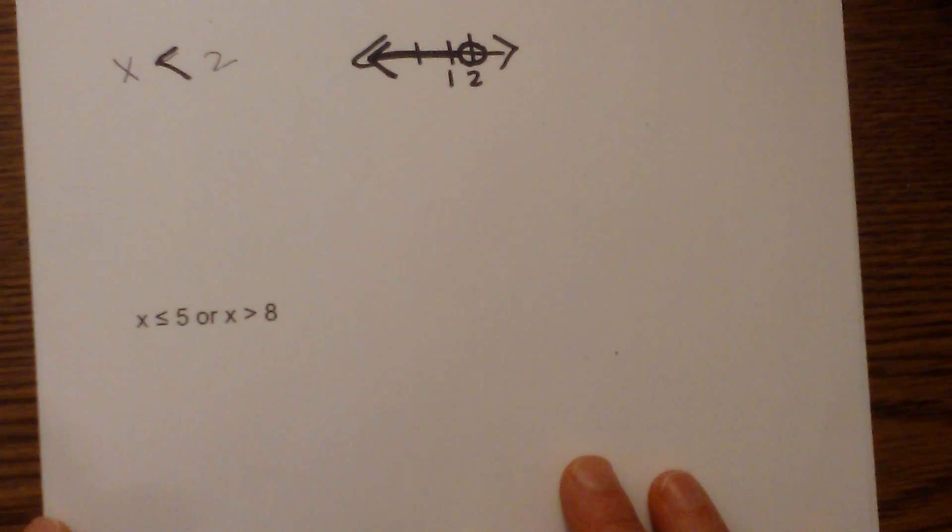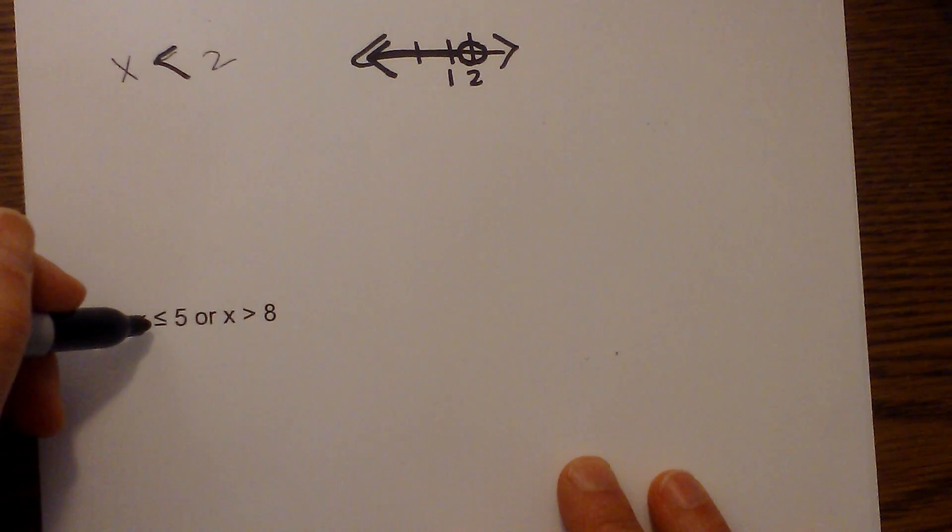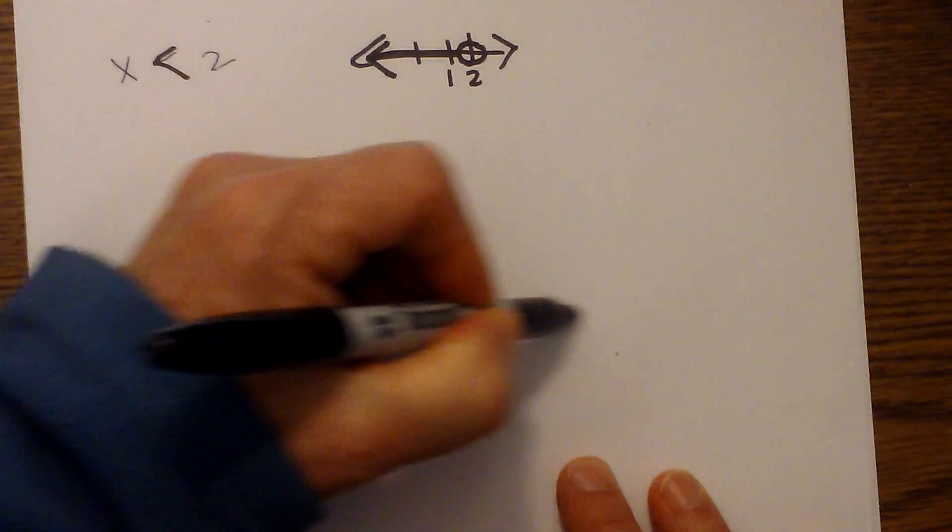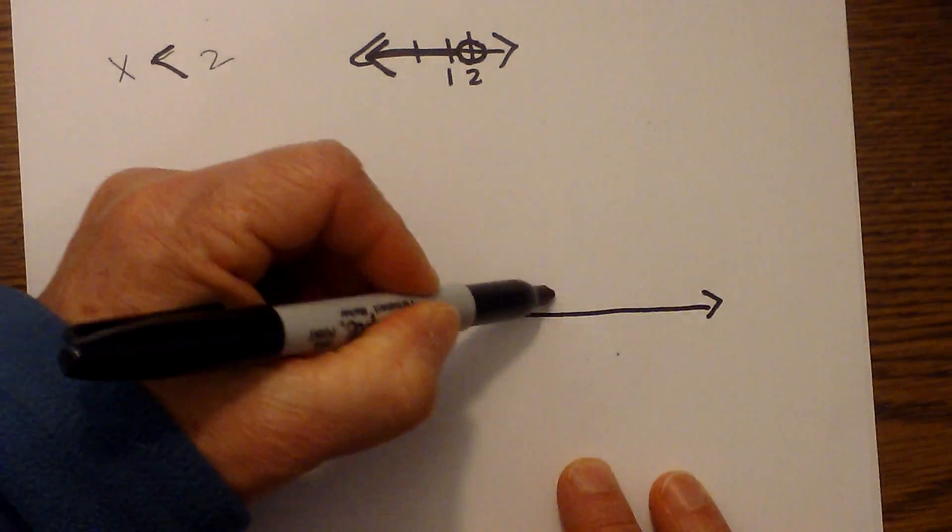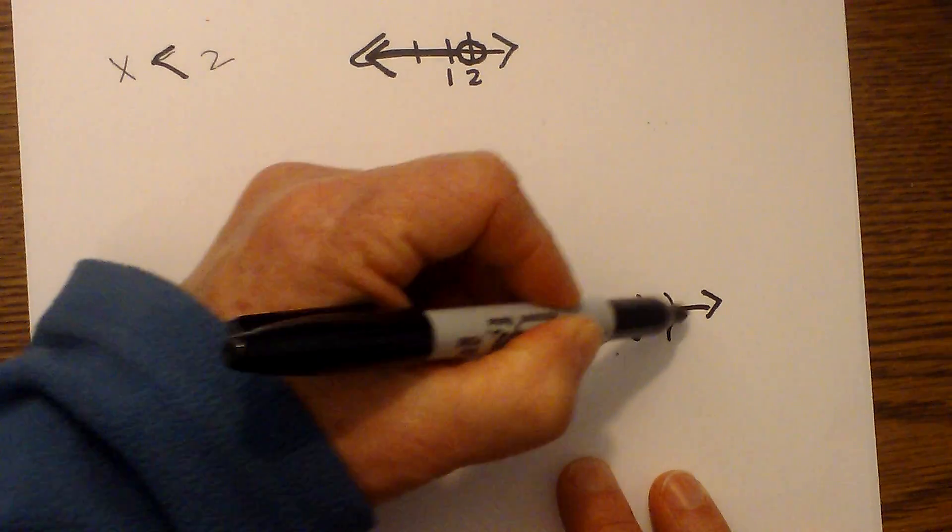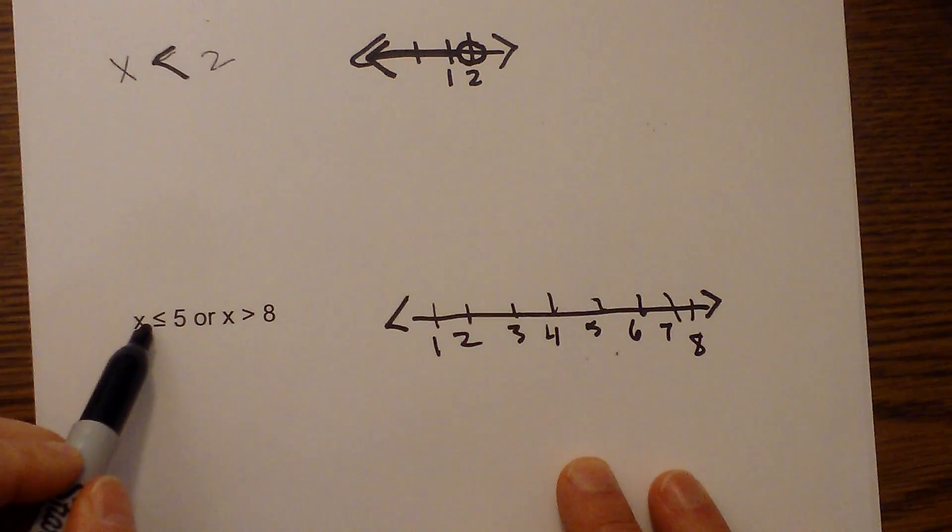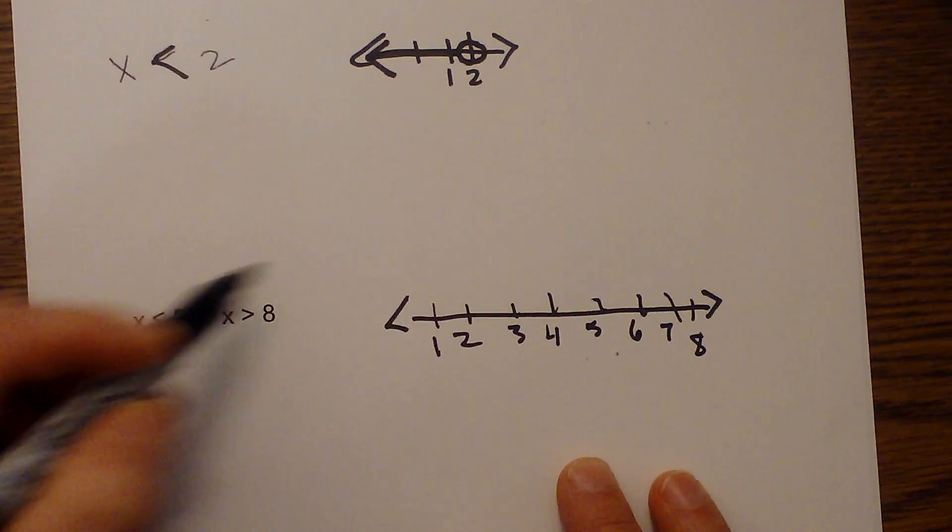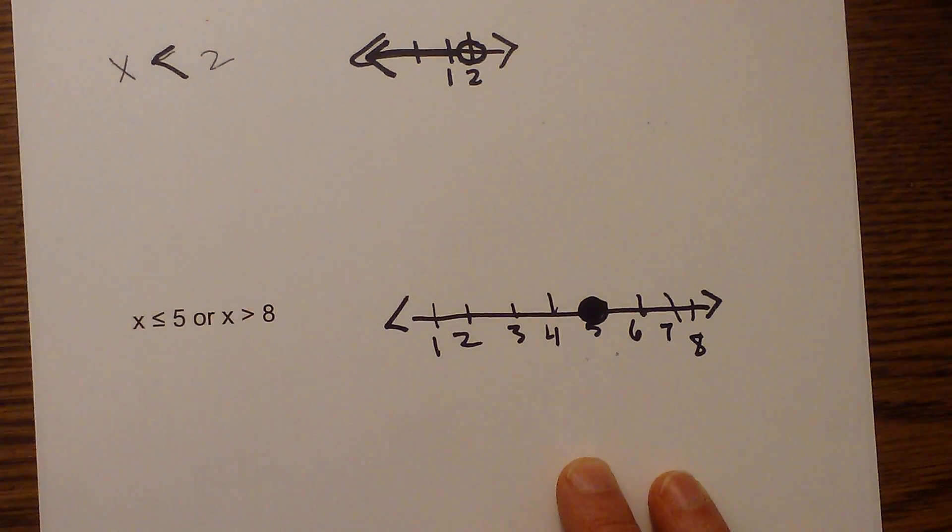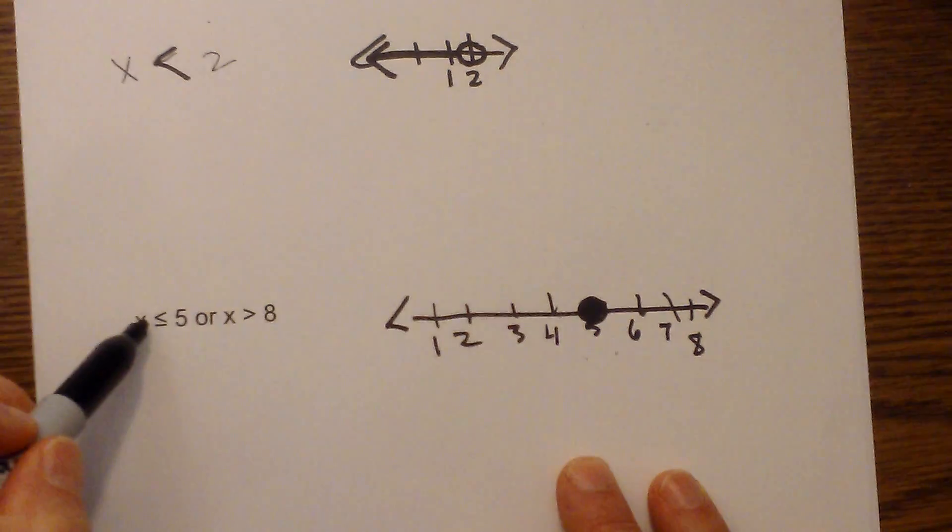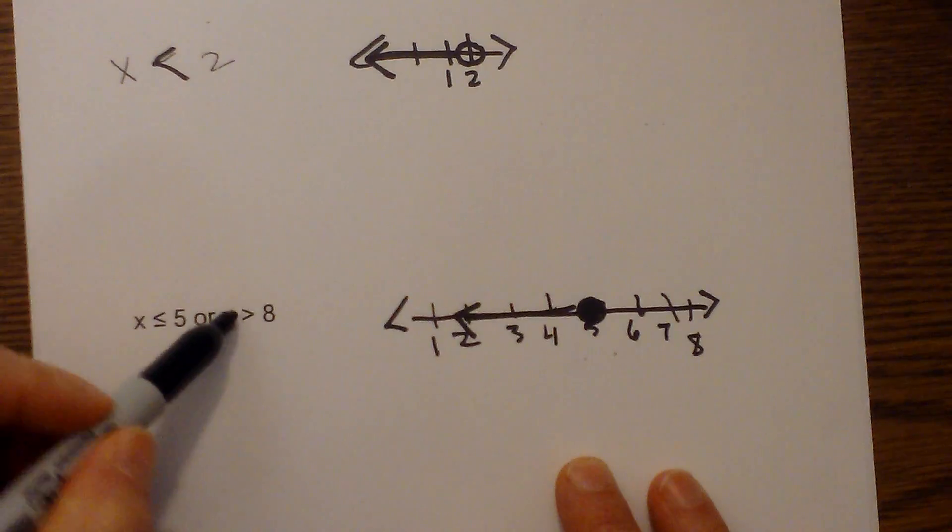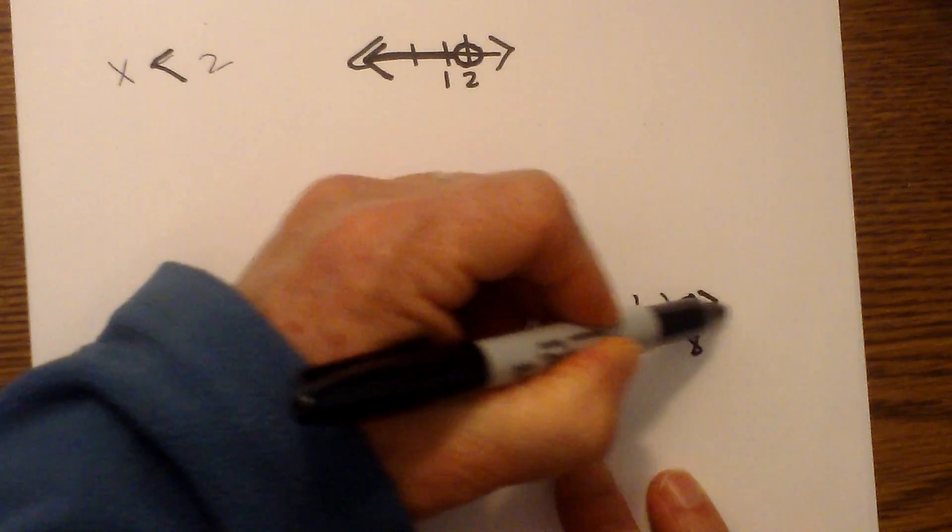How about this one, x is greater than or equal to 5, OR, x is greater than 8. Remember, whenever you have OR, they go in different directions. So we have 1, 2, 3, 4, 5, 6, 7, we'll do 8 here. So it is greater than or equal to 5, so I'm going to circle and color in. And then it is less than 5, so that's going to go in this direction, and then it's going to be greater than 8, and so that will be open.